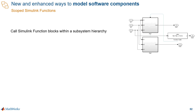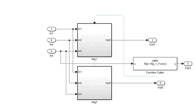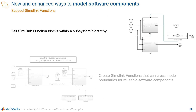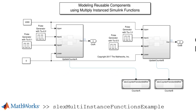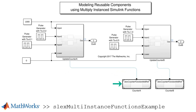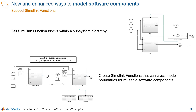If you need to call that function outside of the subsystem, you can do that too by simply using the dot notation, meaning subsystem name dot function name. And you have the option to use function connectors that show you the graphical connections between Simulink functions and their callers. If you're using model references, Simulink functions can also cross the model boundaries, which can help you model shared resources in a reusable software component. These scoping capabilities are helpful for promoting componentization and reuse in your designs.